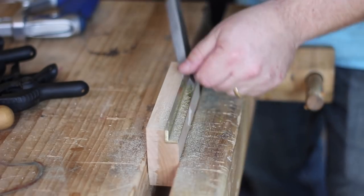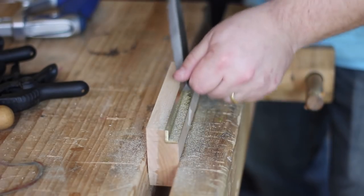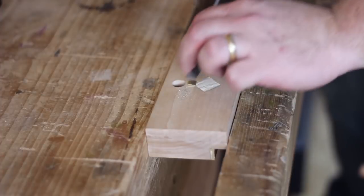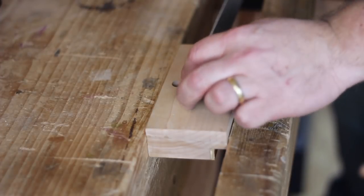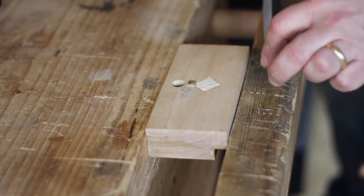After the epoxy cured, I filed the brass flush with the wooden fence. To file the brass foot flush, I wedged it in place with a small square of softwood.